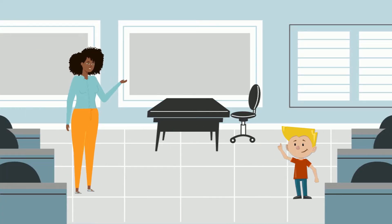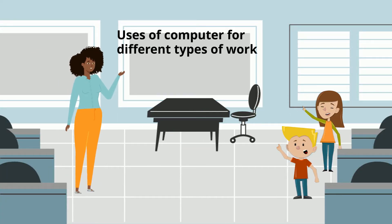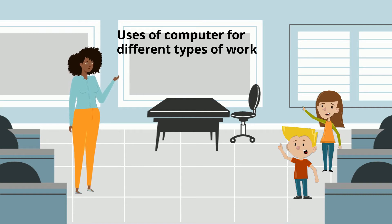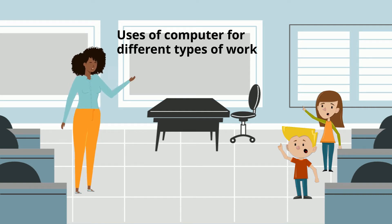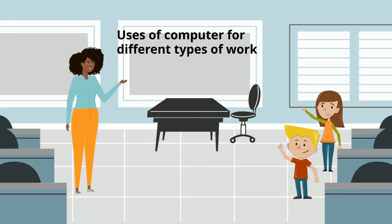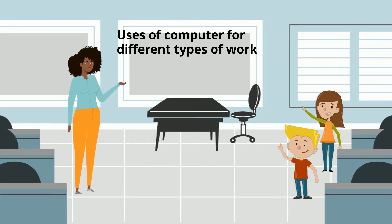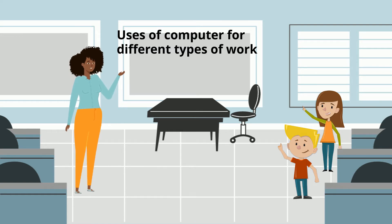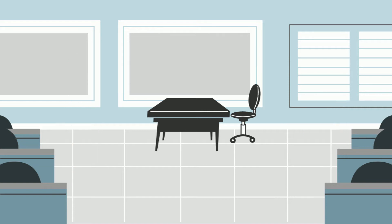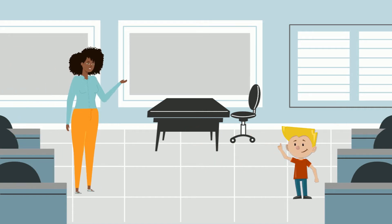Uses of computer for different types of work. Computer is an electronic machine. It works on electricity. It can do different types of work. It stores and processes data with high speed and accuracy. It is useful for us.